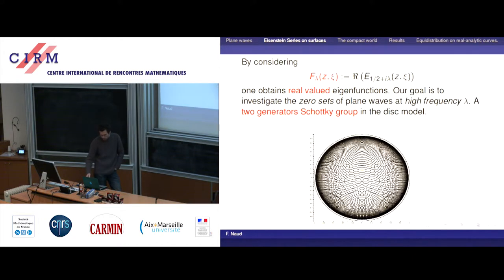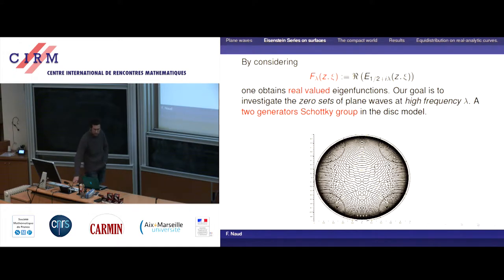What we want to do is say something about the nodal structure, just like in the compact case. First we have to take real or imaginary parts, which makes sense because the eigenvalue is real. Our standard goal is to look at what happens when the frequency is high — we are looking at the semi-classical regime.